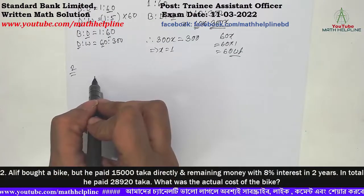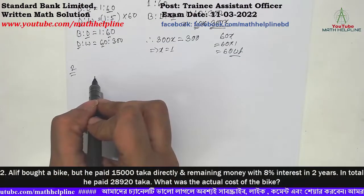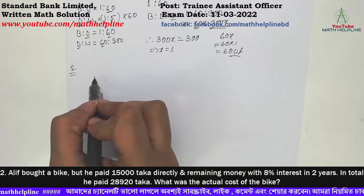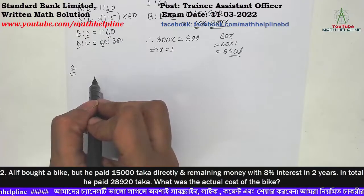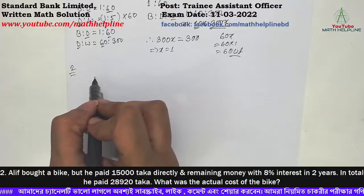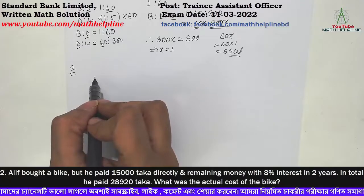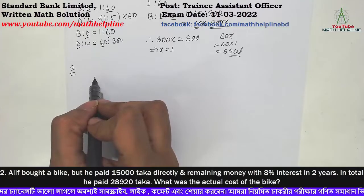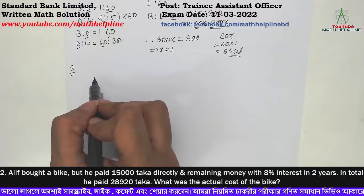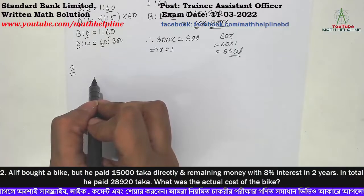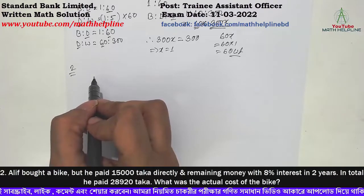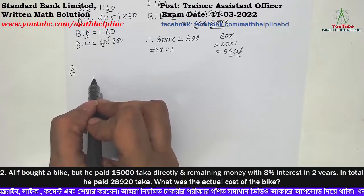Ali bought a bike but he paid $15,000 directly and the remaining money with 8% interest over 2 years. In total he paid $28,920. What was the actual cost of the bike? The other $15,000 is part of the higher cost of the bike.